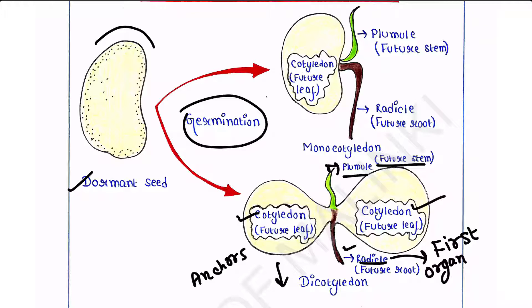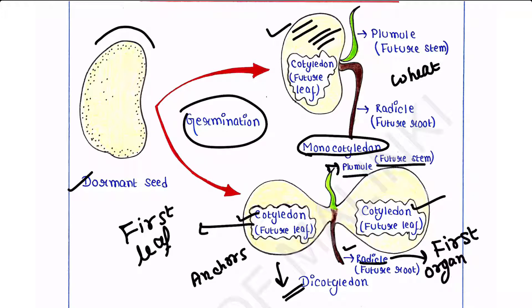From a germinating seed, it is the first leaf. Plants with the seed having only one cotyledon, like this, it has only one cotyledon. This part is the cotyledon. It is called monocotyledon because it has only one cotyledon. Example: wheat. Plants with the seed having two cotyledons are called dicotyledon. Here you can see this is one cotyledon, this is the second cotyledon. Example: mustard.